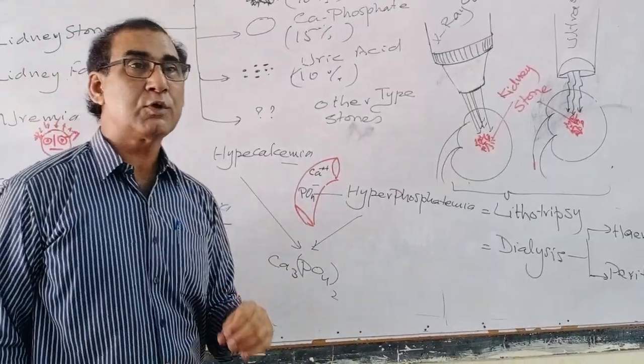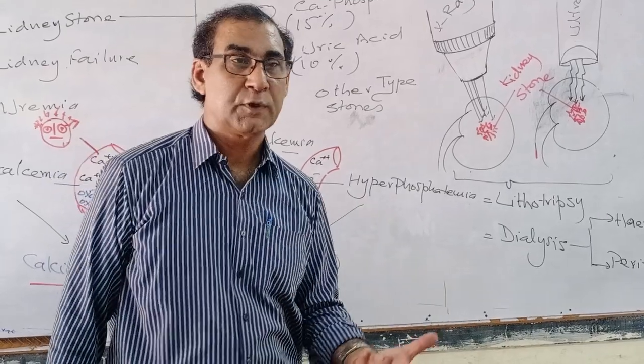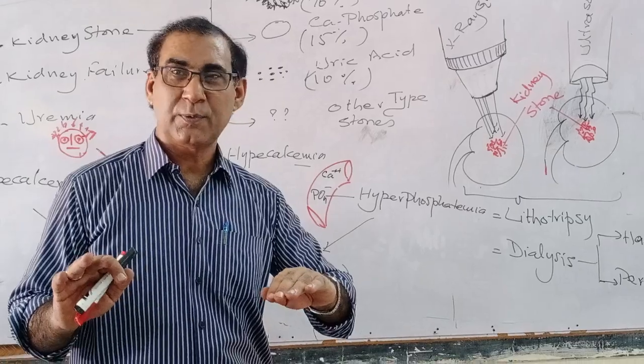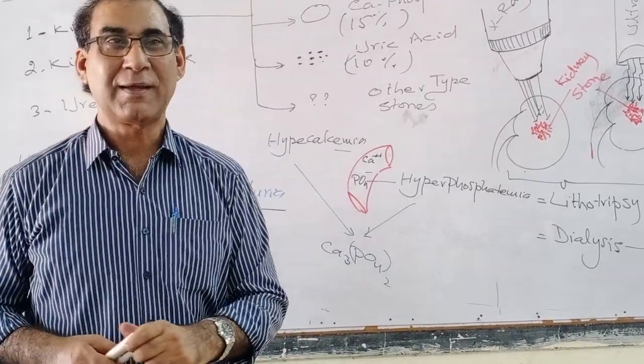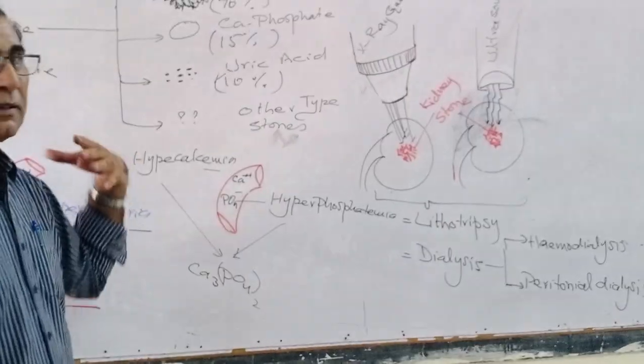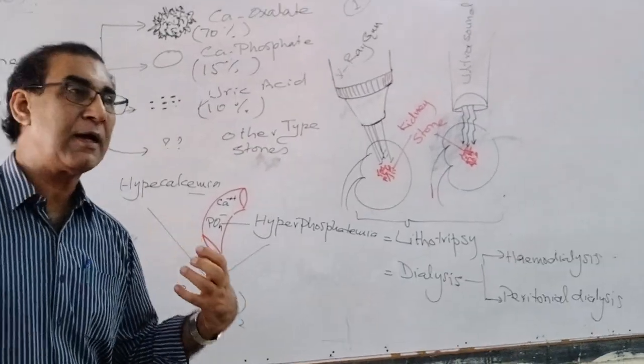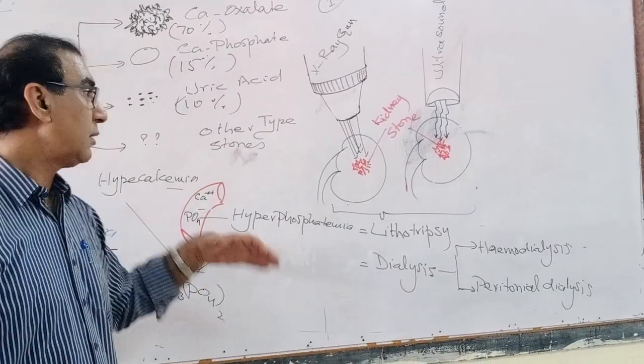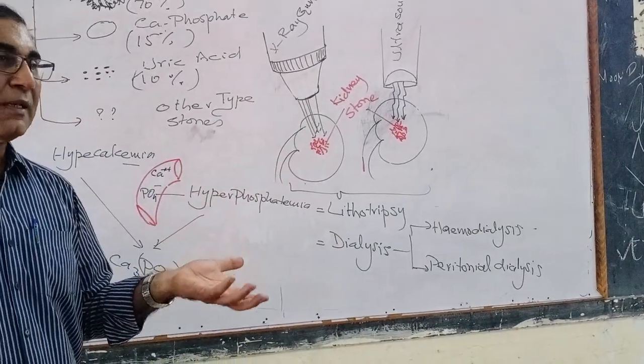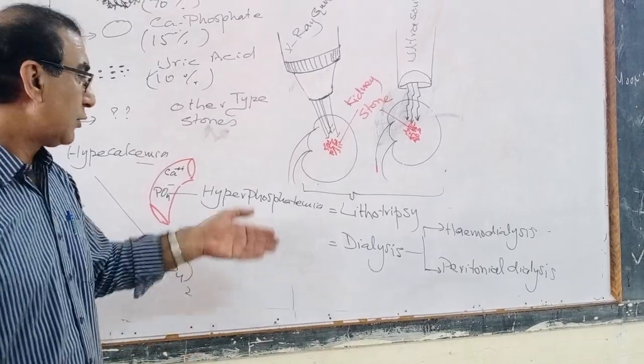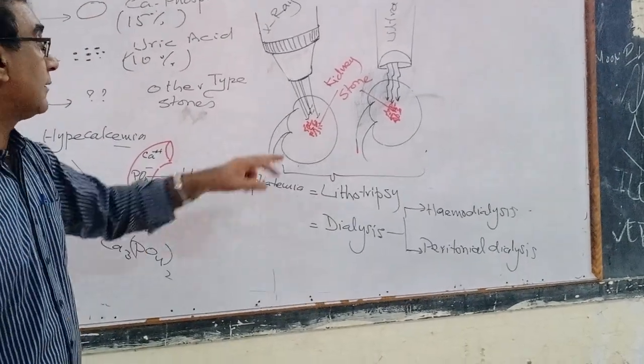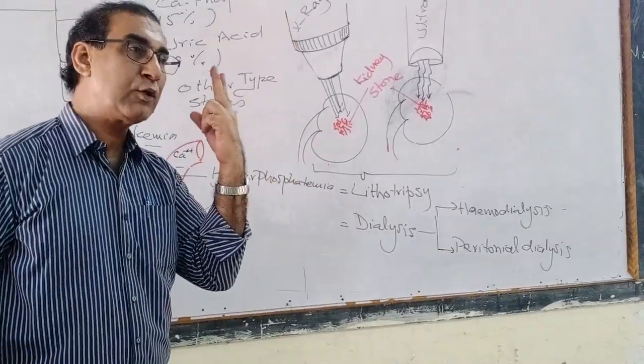Now, let's come to the solution. You know, there is a solution to every problem and there is a problem to every solution. So the solution to the stone in this age, in this era, there is a solution. That is known as lithotripsy. Lithos means stone and tripsy means to break. So lithotripsy is a mechanism by which you break the stones. It is carried out by two ways.